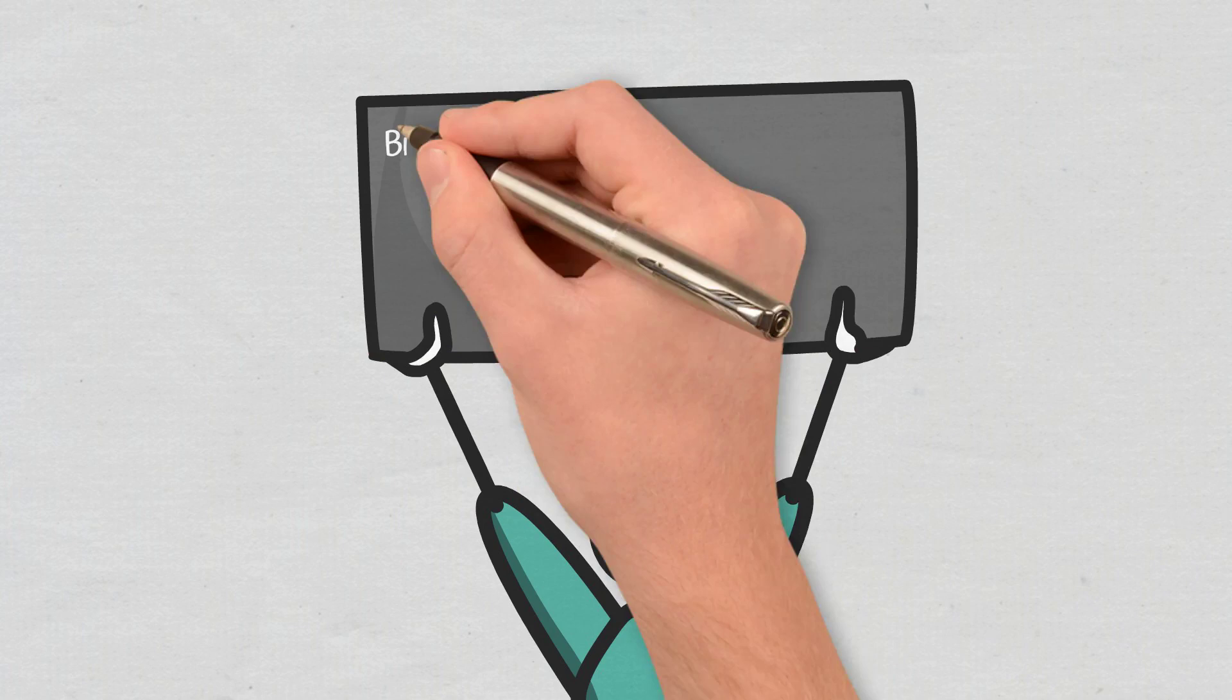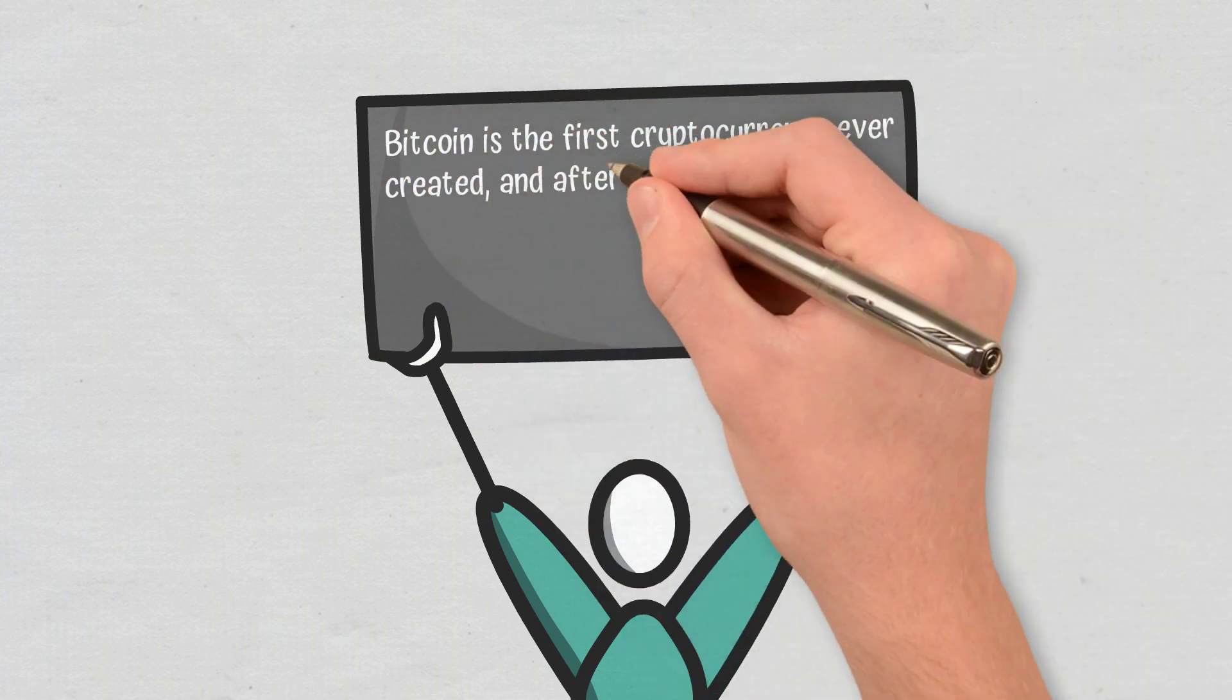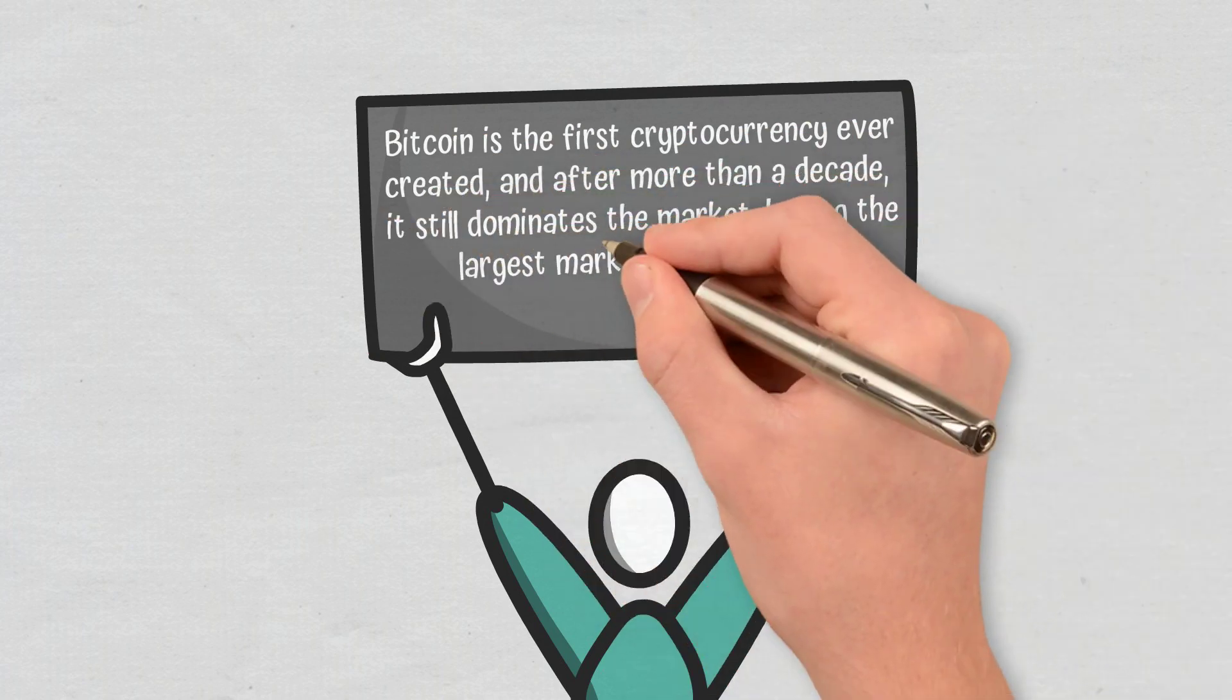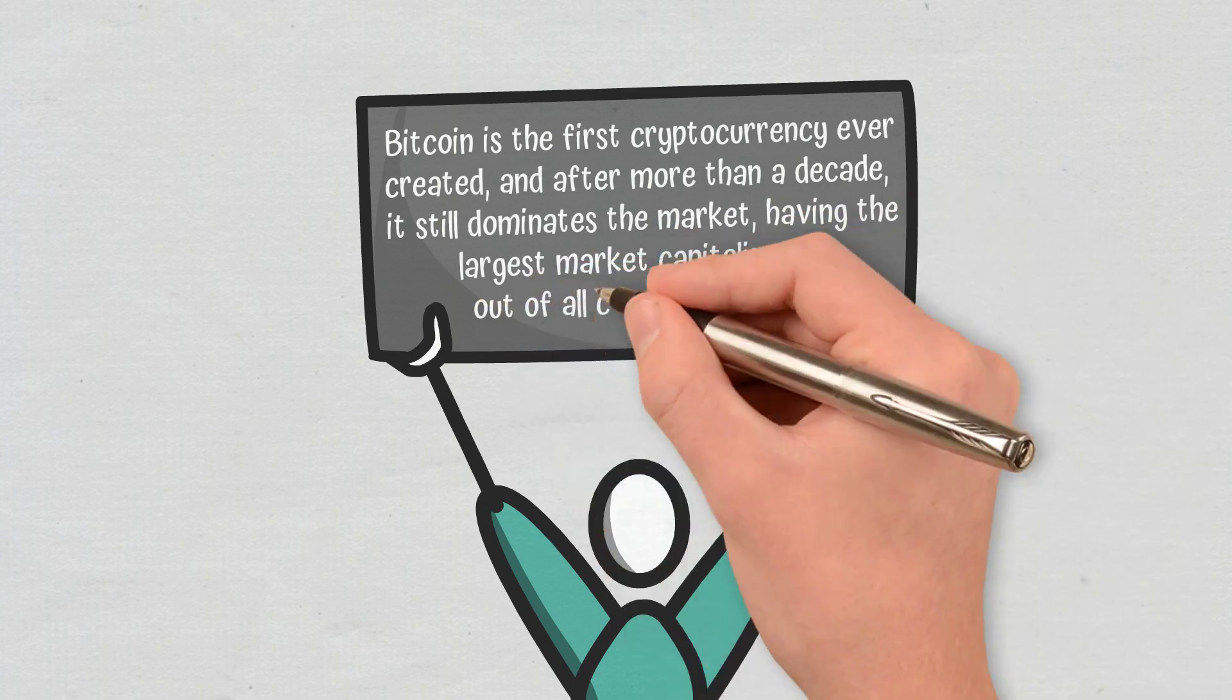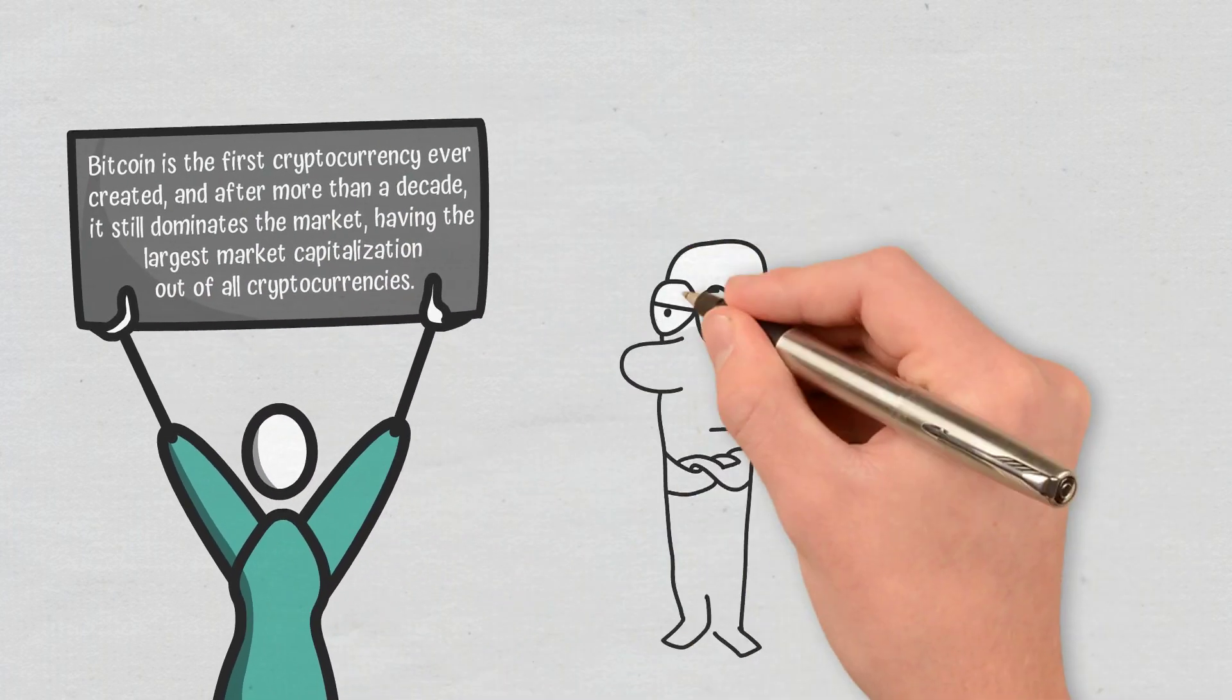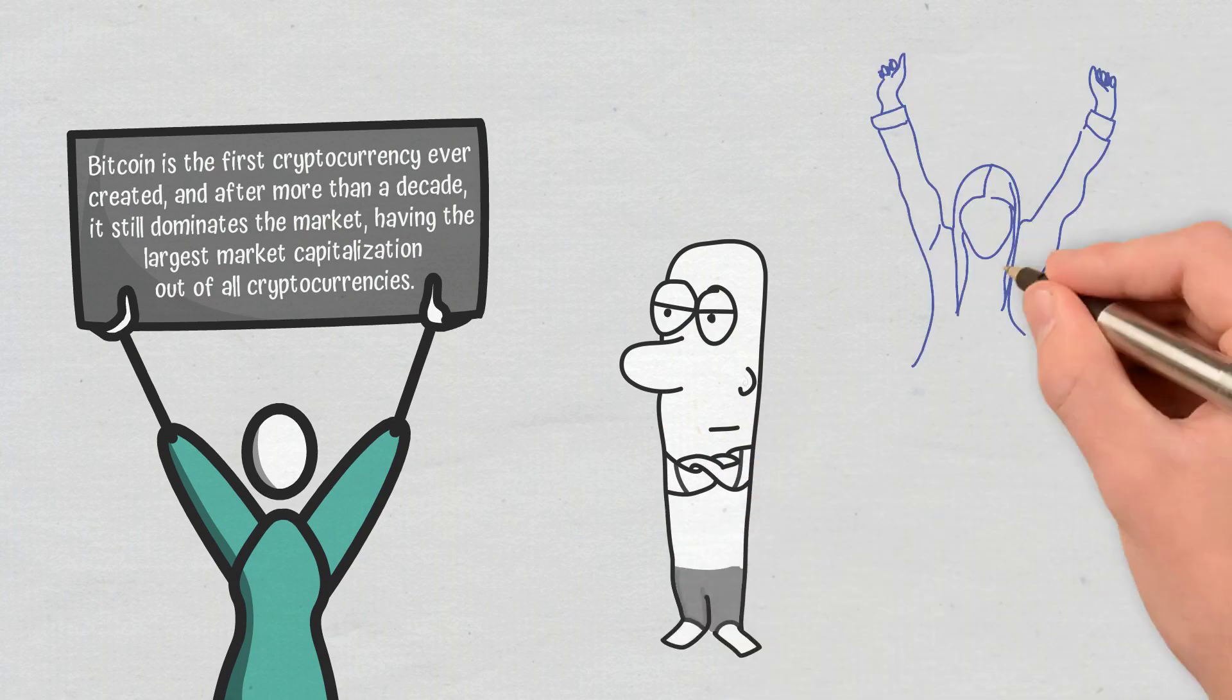Conclusions: Bitcoin is the first cryptocurrency ever created, and after more than a decade, it still dominates the market, having the largest market capitalization out of all cryptocurrencies. Old-school investors may shun it, but new investors tend to embrace it.